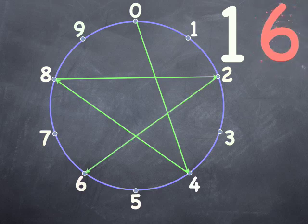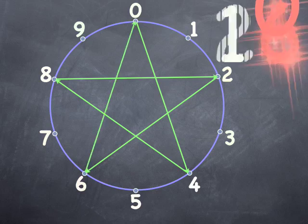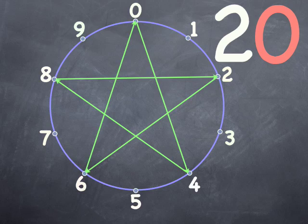Add four more again we're at sixteen, the last digit is six. Adding four more again takes us to twenty. The last digit is back to zero. Yes, the fours have created a star.